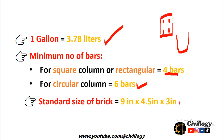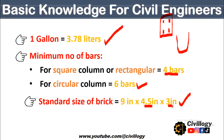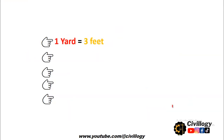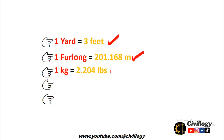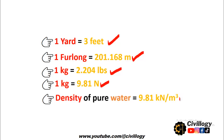The standard size of a brick may vary from country to country, but in Pakistan we use 9 inches × 4.5 inches × 3 inches. Other important units: 1 yard is equal to 3 feet; 1 furlong is equal to 201.168 meters; 1 kg is equal to 2.204 lbs. These units are very important to remember because they help you in conversions. Also, 1 kg is equal to 9.81 Newtons and the density of pure water is 1000 kg/m³. These are questions usually asked during interviews and in MCQ tests.